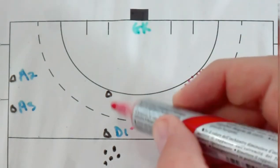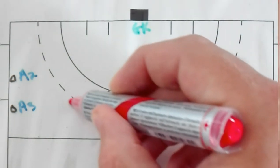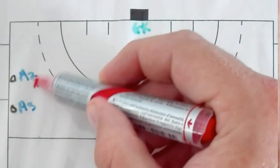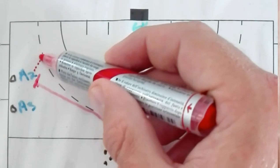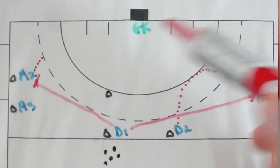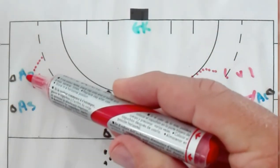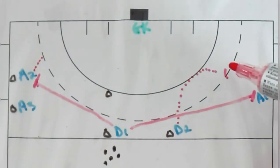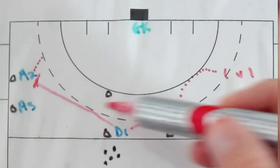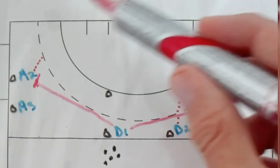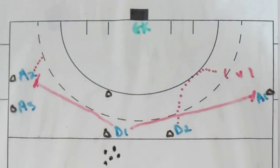defender number one will pass the ball to attacker number two. Attacker number two will receive and will start dribbling in towards the circle. As soon as that happens this attacker will form part of this attacker, so those will be two attackers and this one defender will become a 2v1 in this little area. After this 2v1 has been done playing,